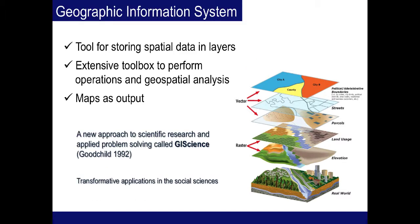A geographic information system, or GIS, is an analytic tool that allows us to store and visualize data in new ways and to evaluate spatial associations between even disparate data types. It has been suggested that the transformative power of GIS makes it much more than just a mapping program or analytic platform. Rather, it is a new approach to scientific research and applied problem solving called GI science.